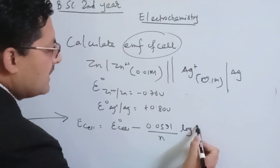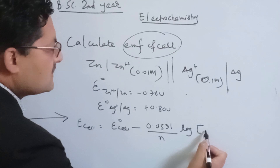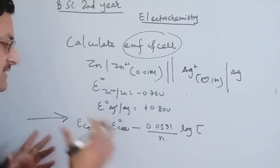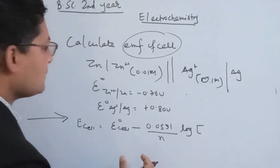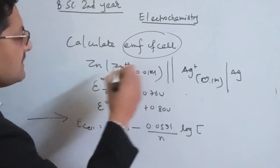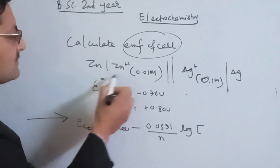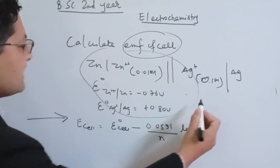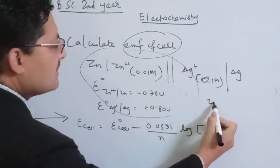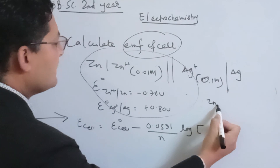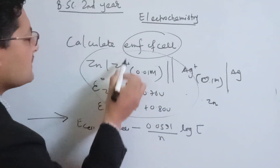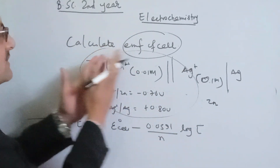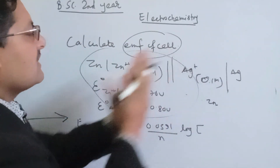We use the oxidized form divided by the reduced form for the reaction quotient. In this special reaction involving the zinc system, this side is the anode and this side is the cathode.